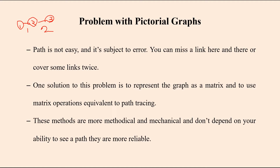So what is the solution without using these pictorial graphs? Is there any alternative? One solution is to represent the graph as a matrix. We can represent that particular graph as a matrix and use some set of matrix operations equivalent to path identification. These matrix methods are more methodological and mechanical, and don't depend on your ability to visually see a path. They are more reliable. Whenever a link is present, we make an entry into the matrix.